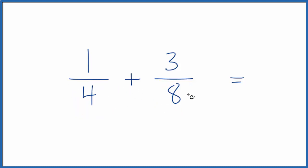So I could multiply 4 by 2, that would give me 8. The denominators would be the same, but I need to also multiply the top by 2, because really 2 divided by 2 is 1, so I'm just multiplying by 1.